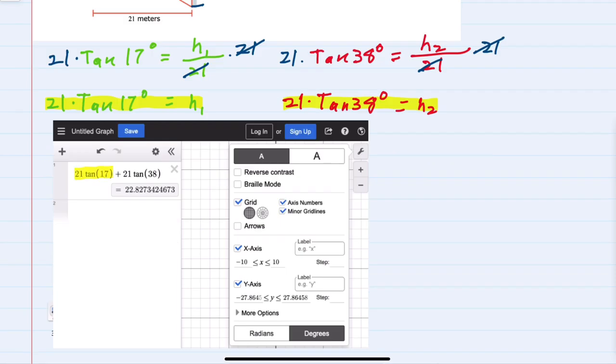We have the first one, 21 times the tangent of 17 plus the second one, which is 21 times the tangent of 38. Again, being careful that I am in degrees, I get that total measure is 22.827 and so on.